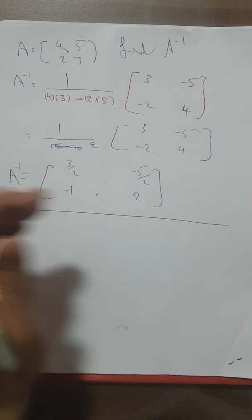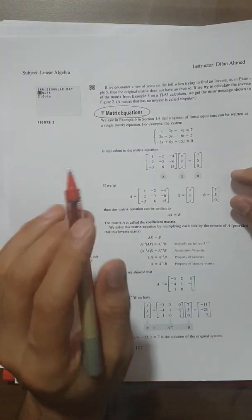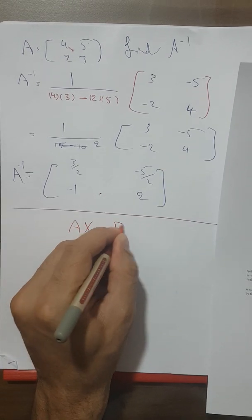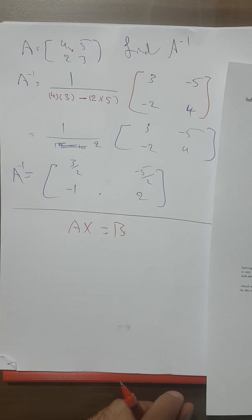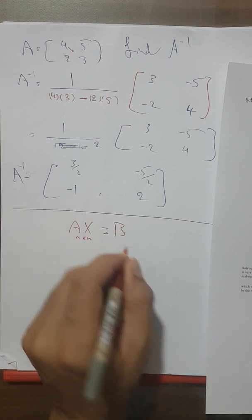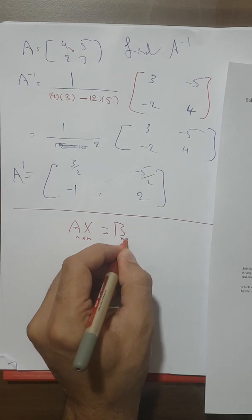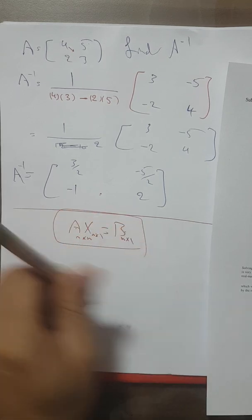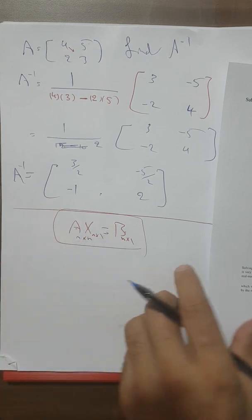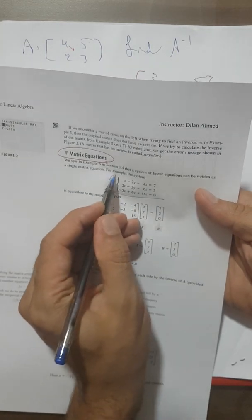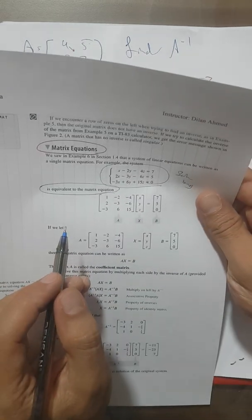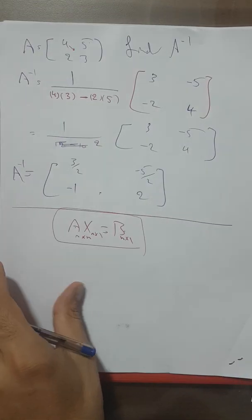Now, what do we mean by a matrix equation? Do not forget that you need to know the inverse of a matrix for this. If I have the matrix equation AX = B, where A and B are matrices, A should be an n×n matrix, X should be an n×1 matrix, and B is also an n×1 matrix. This is the rule. When I say solve by matrix equation, you should use this method.